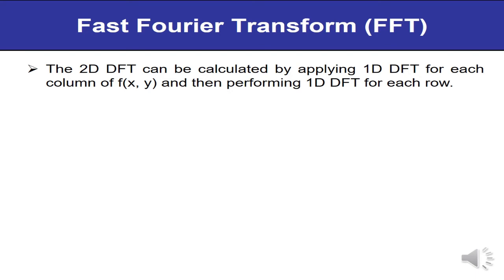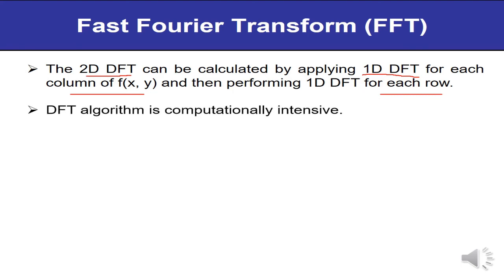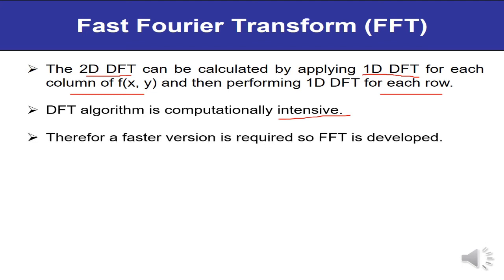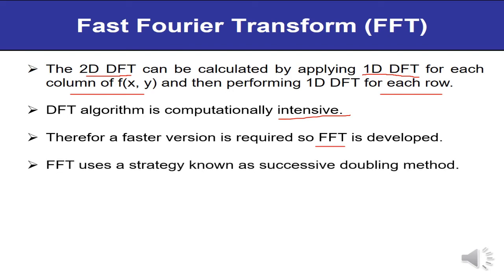Now let us talk about the fast Fourier transform. The 2D DFT can be calculated by applying 1D DFT for each column of f(x,y) and then performing 1D DFT for each row. DFT algorithms are computationally intensive, so a faster version was developed known as the FFT — fast Fourier transform. FFT uses a strategy known as the successive doubling method.